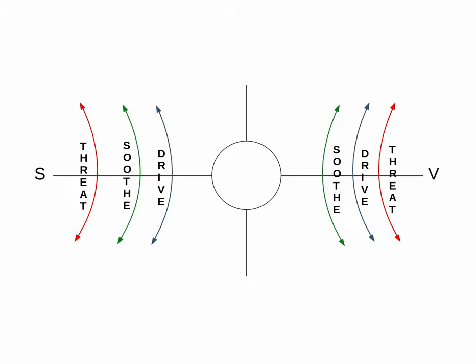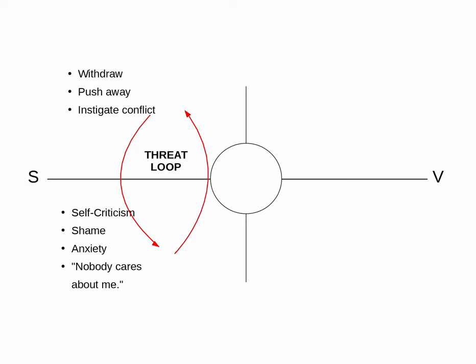Our emotion systems can be seen along this coordinate plane. Our threat, drive, and affiliative systems are necessary for survival. They also kick in when we are striving toward something vitally important to us, or when someone we care about is hurt or in danger. Likewise, across the vertical axis, our emotion systems involve loops between our cognitive and emotional experiences and our outward behavior.